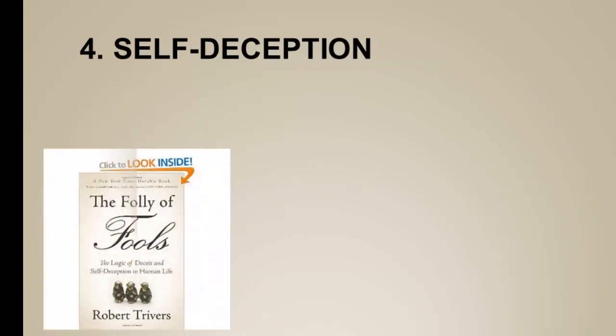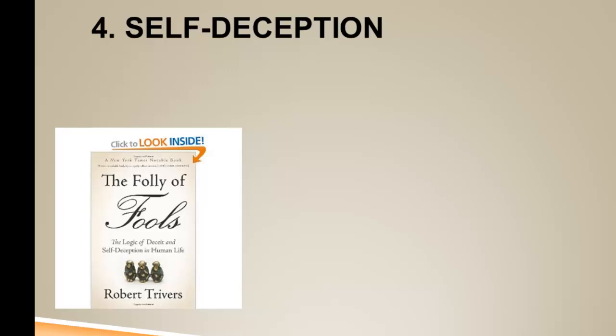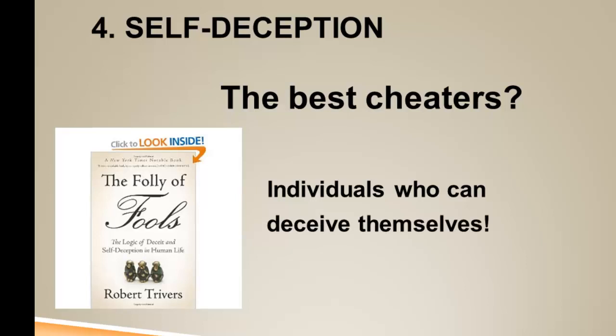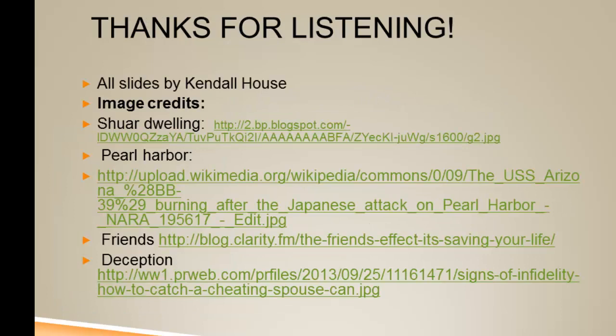Trivers' most original argument — one he has pursued at great length, including in a recent book called 'The Folly of Fools: The Logic of Deceit and Self-Deception in Human Life' — is that the best cheaters would be those able to deceive themselves. If we can deceive ourselves, we can deceive other people, because we'll put on such a good front of being honest and reliable without being aware we're doing so. He suggested our brains may have evolved this capacity for self-deception because it would be selected for in the ability to take advantage of close relationships and gain benefits without cost. Thank you for listening — we'll be back with more.